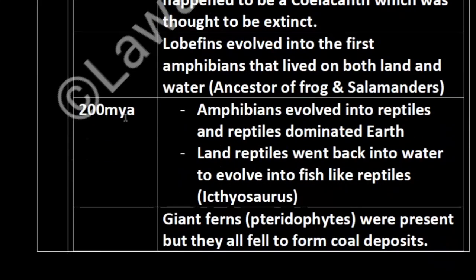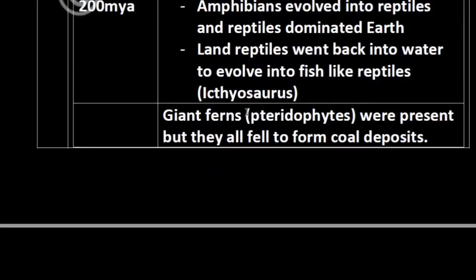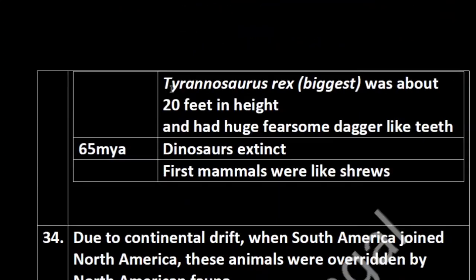200 million years ago, amphibians evolved into reptiles. Reptiles dominated the Earth's land. Some reptiles went back into water to evolve into fish-like reptiles — examples are Ichthyosaurs. Giant ferns (pteridophytes) were present but fell to form coal deposits — this is an important question: coal deposits are formed from pteridophytes, mainly giant ferns.